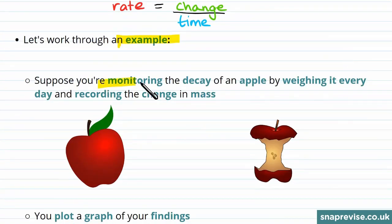Suppose you're monitoring the decay of an apple by weighing it every day and recording the change in mass. The measure of decay may vary - it may be the amount of mold going on something, or the percentage loss of mass or size.